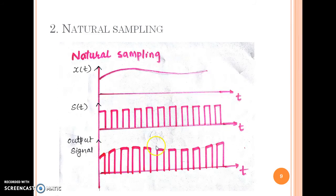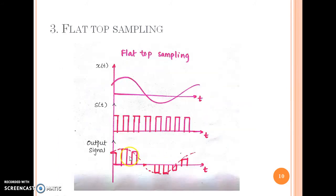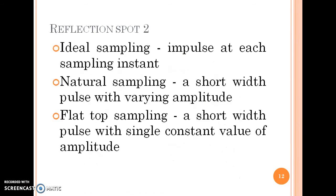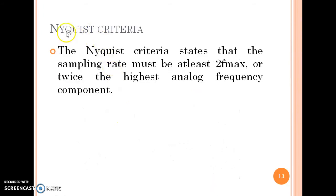This can be clearly seen in the graph: impulses in ideal sampling, short width pulse with varying amplitude in natural sampling, and short width pulse with constant amplitude in flat top sampling. Now let us see what is the Nyquist criteria. It states that the sampling rate must be at least two times fmax, or twice the highest analog frequency component — that is, Fs ≥ 2 × fmax.